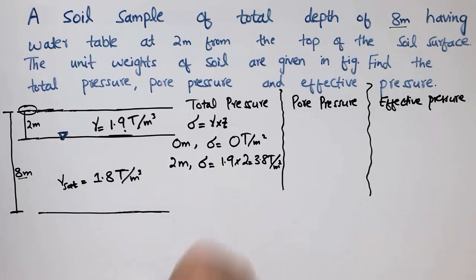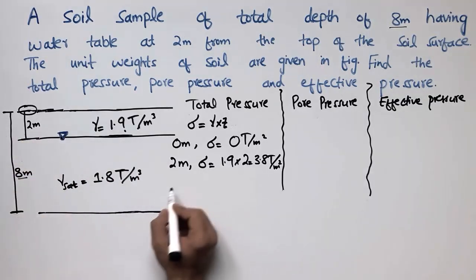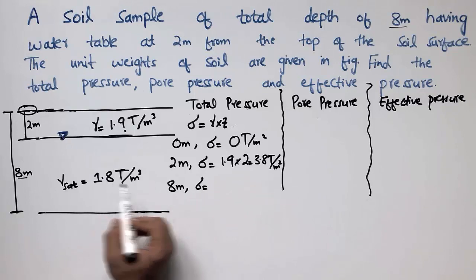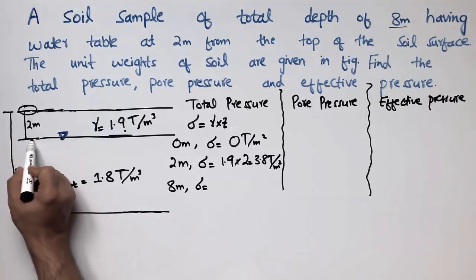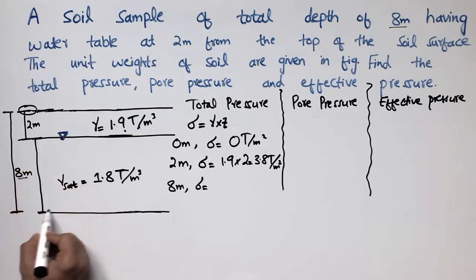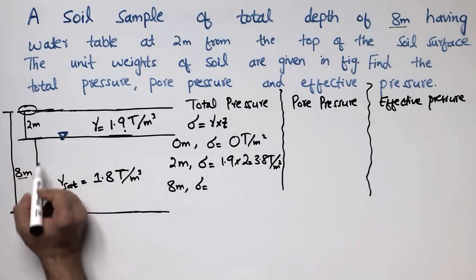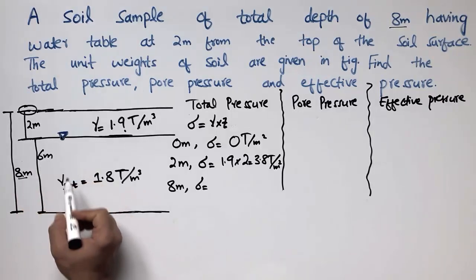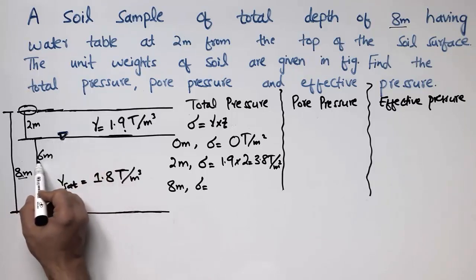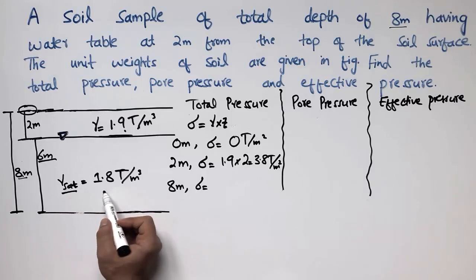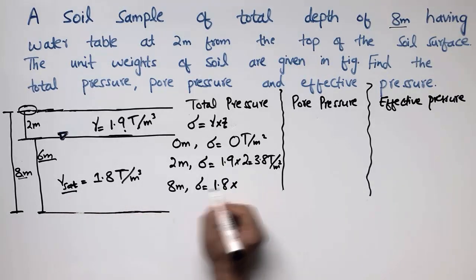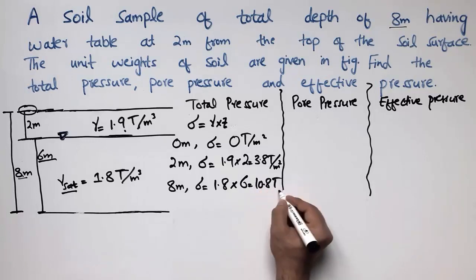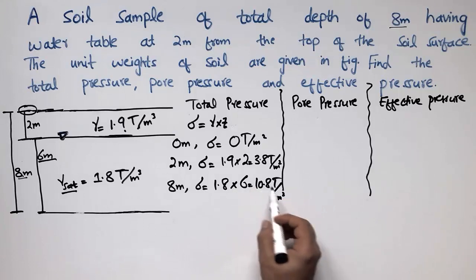At 8 meters from the top, the saturated soil below the water table extends 8 minus 2 equals 6 meters. The unit weight of the saturated soil is 1.8 ton per cubic meter. So the total stress contribution from the saturated layer is 1.8 multiplied by 6, which equals 10.8 ton per square meter.